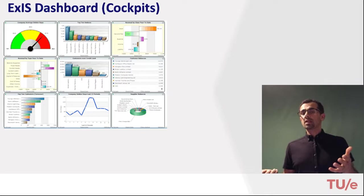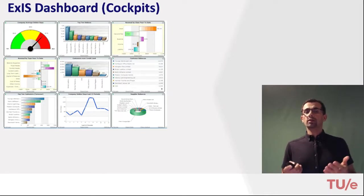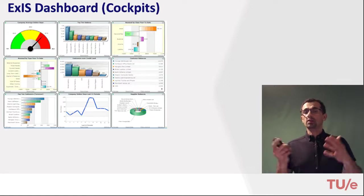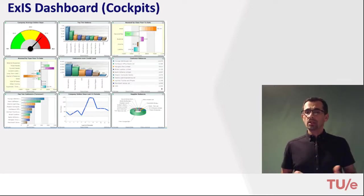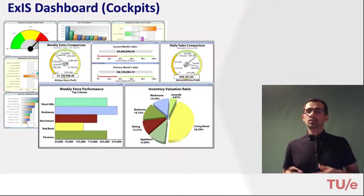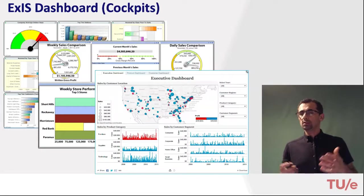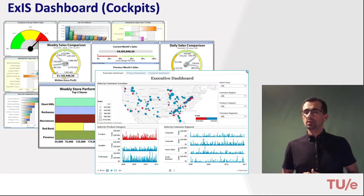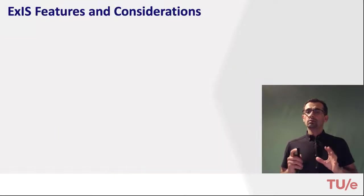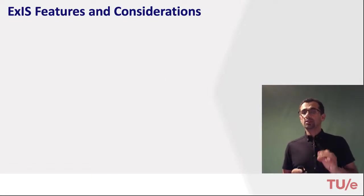Here are some examples of dashboards of executive information systems. Dashboards are a very core component of executive information systems, featuring things like indicators, charts, maps, filter tables, and summary tables.